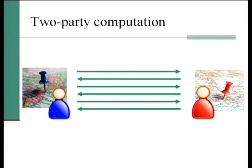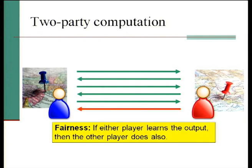There's a lot of stuff you could expect the protocol to deliver — for example, keeping your inputs private, getting the correct answer, et cetera. But the particular topic here that we're worried about is fairness. Fairness requires that if either player learns the output, then the other player should as well.